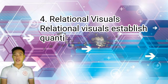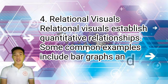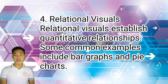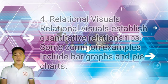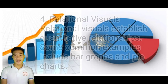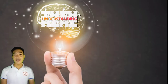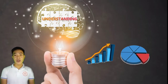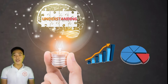Number four is relational visuals. Relational visuals establish quantitative relationships. Some common examples include bar graphs and pie charts. Instead of dumping paragraphs filled with numbers and percentages to show factual information, relational visuals can be effectively used to present the same in a clear and precise manner.